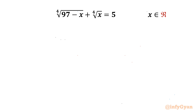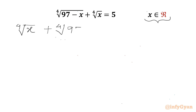Welcome back to Infigyan, my dear friends. In this video we will be solving another very interesting question from Math Olympiads for the real values of x. So let us get started. Our equation is: 4th root of x plus 4th root of (97 minus x) equals 5.